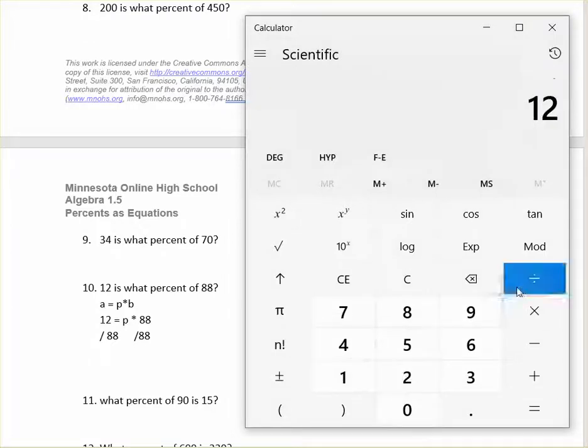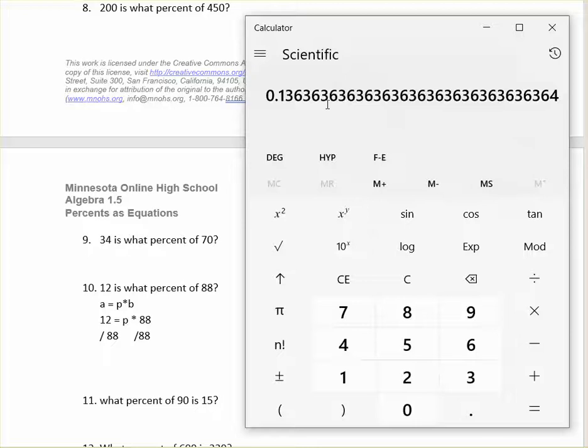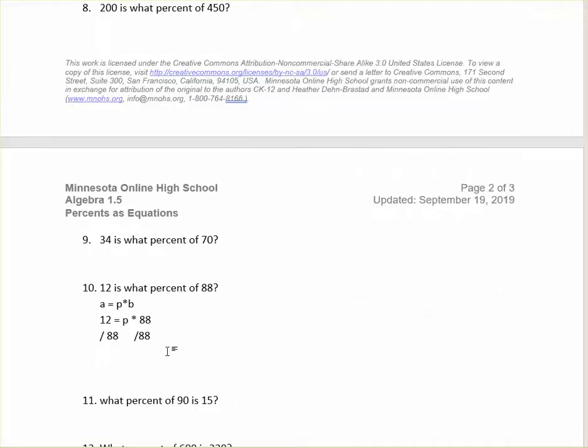So I need to know what 12 divided by 88 is. 12 divided by 88 is 0.136363... I'll write out a few of those. Dot, dot, dot means that pattern will continue. That is equal to p. Now what we're looking for is a percent. If you are looking for a percent, you will solve this with the decimal. Now we need to change that into a percent.